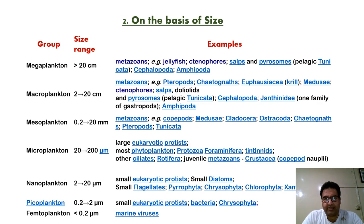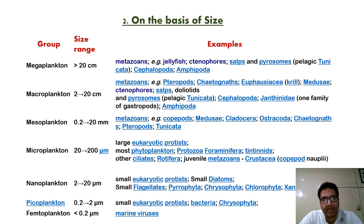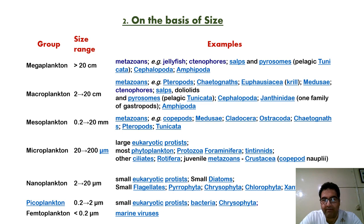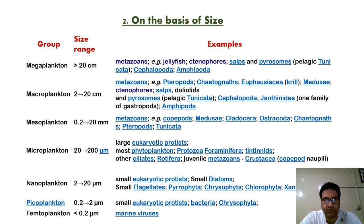On the basis of size, we classify plankton into different groups. If a group has a size more than 20 centimeters, they are called as megaplankton. Metazoans, jellyfish, ctenophores, salps, pyrosomes, tunicates, cephalopods, and amphipods come in this very group.